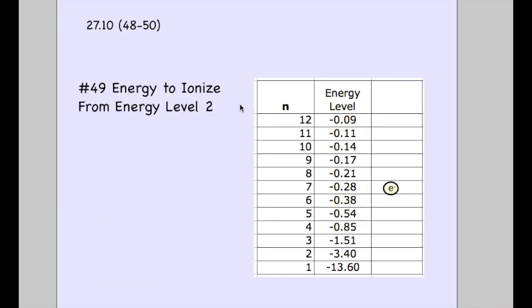All right, 49 is actually really straightforward. Energy to ionize from energy level 2. So if I take this electron and have it land at energy 2, it needs to be kicked out of the manhole. So in order to do that, you need 3.4 eVs of energy. Again, remember this is just with hydrogen.